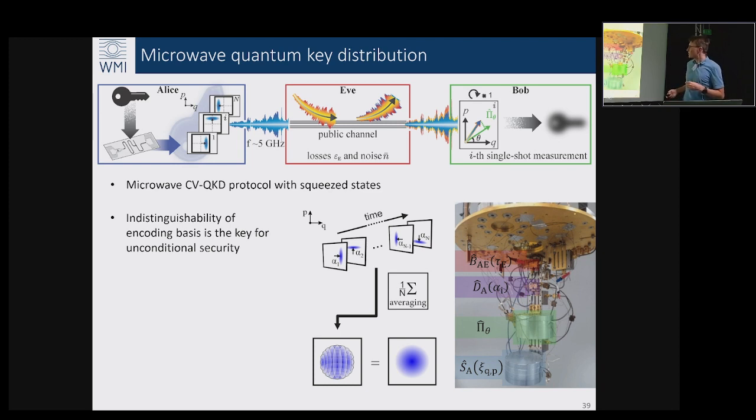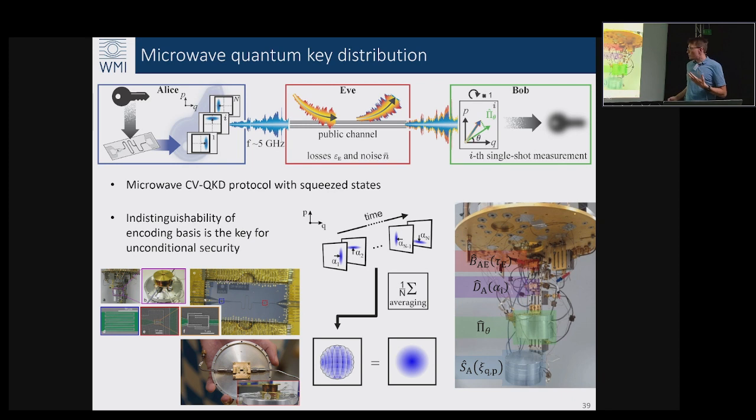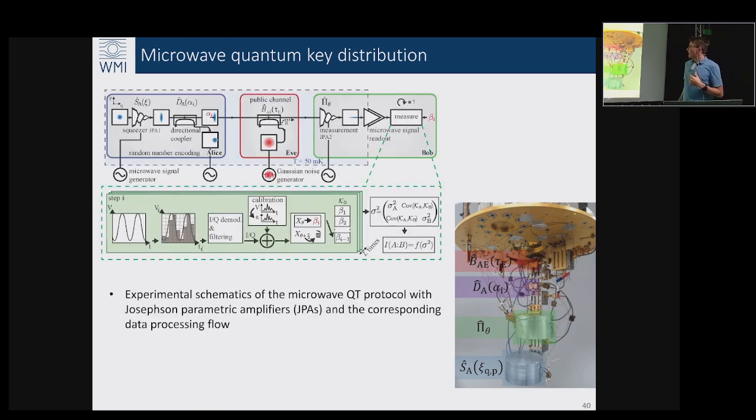This is a more technical picture describing the details of our setup which maybe I don't have time to explain but still show for the experts. The key here was that when we create our squeezed displaced states here we were always coupling sometimes weak but sometimes strong noise generated by an external Gaussian noise generator which was simulating the strength of the Eve attack and the temperature of our noise environment.